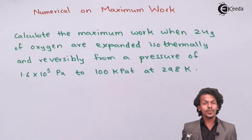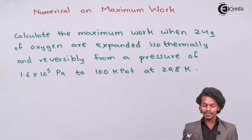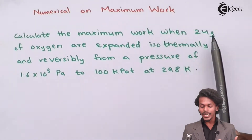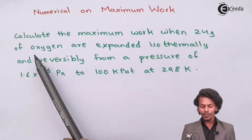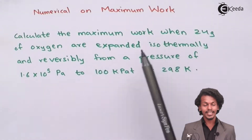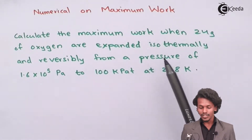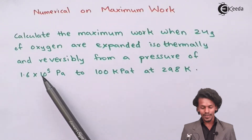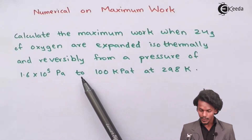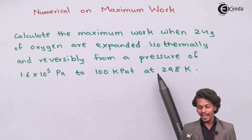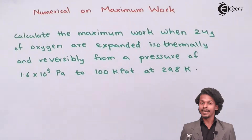The question provided to us is: we have to calculate the maximum work when 24 grams of oxygen are expanded isothermally and reversibly from a pressure of 1.6 × 10⁵ Pascal to 100 kilopascal at 290 Kelvin.